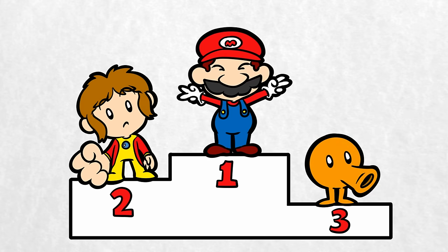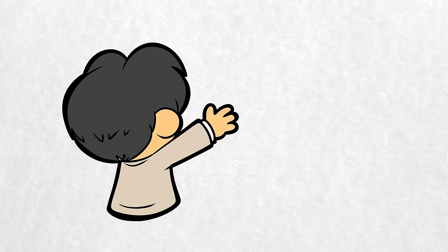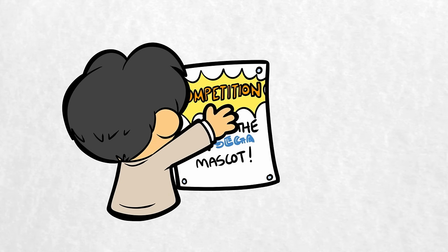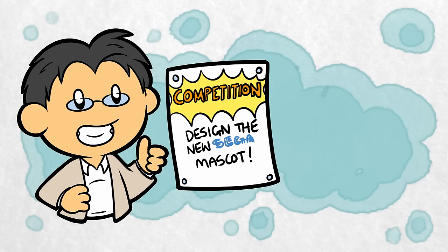It didn't help that, with his unusual facial hair and focus on platforming, he did feel a little bit like a Mario copycat. So how could Yuji Naka come up with the perfect Mario killer? After a lot of thought, he decided he couldn't do it alone. He threw things open to all Sega employees by running a contest to design a new mascot.